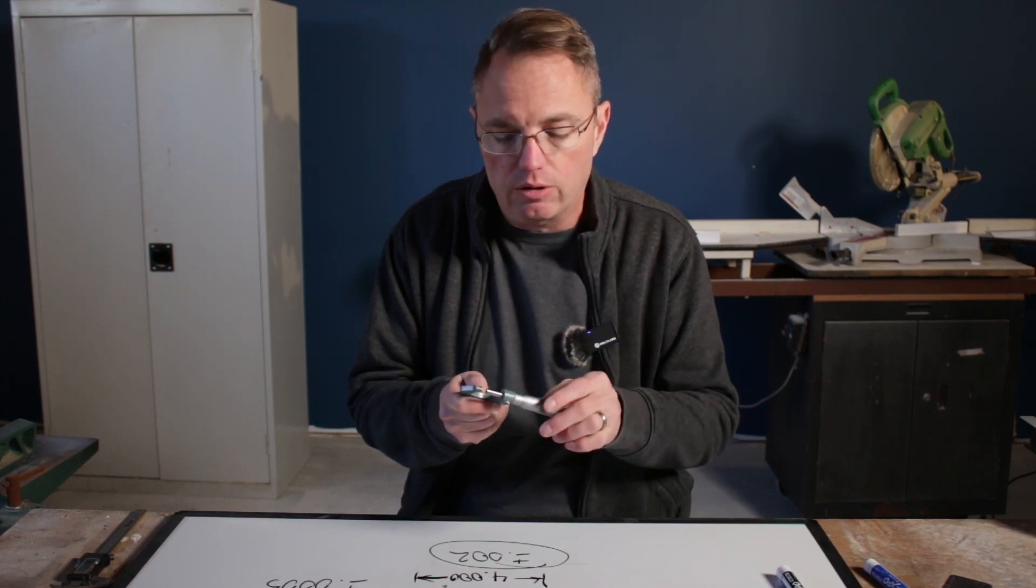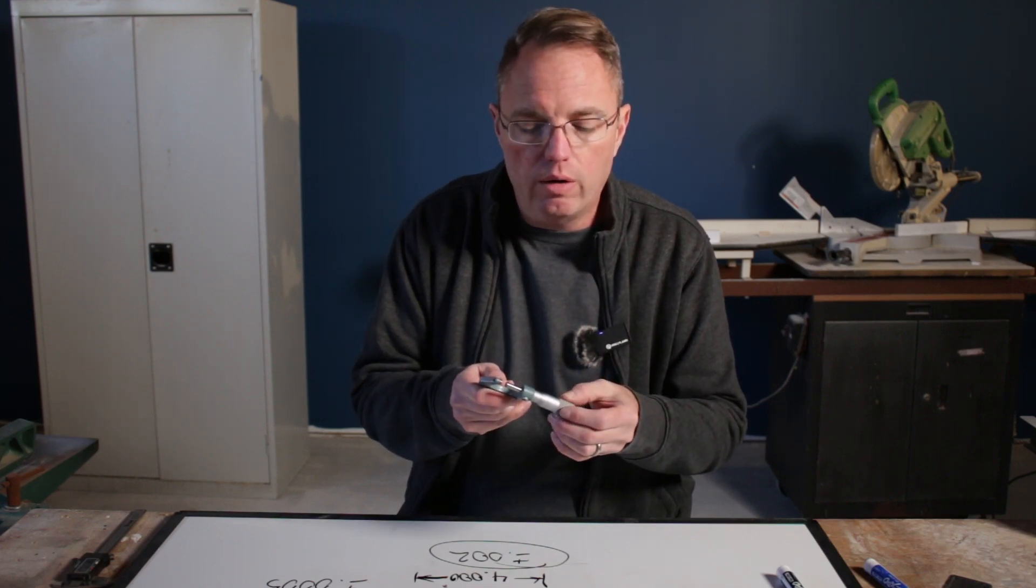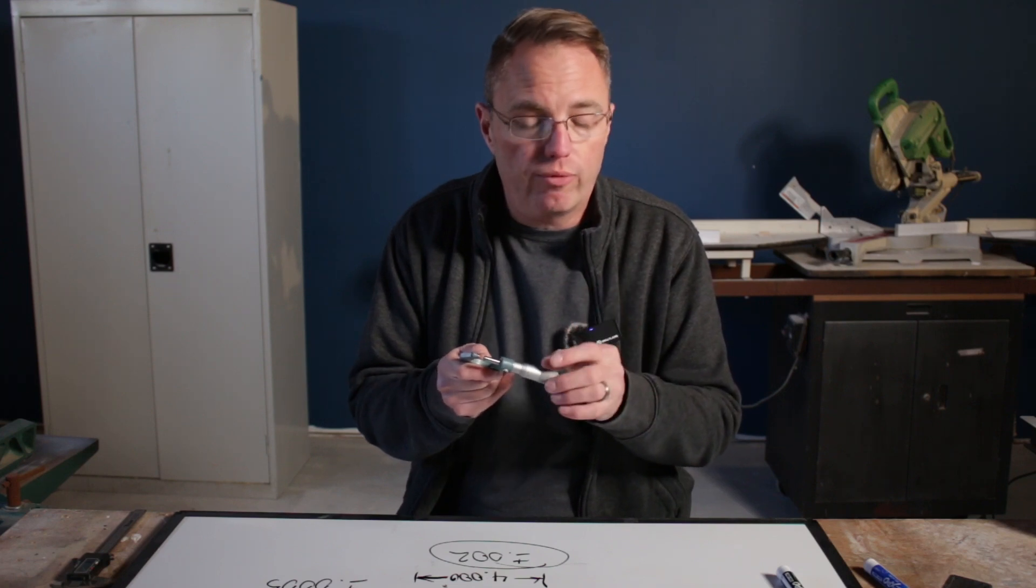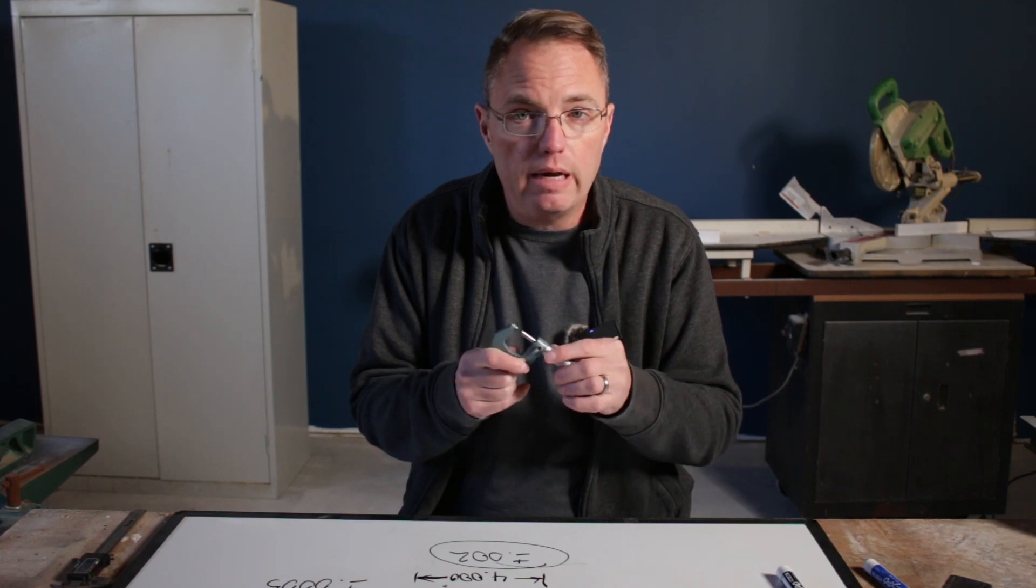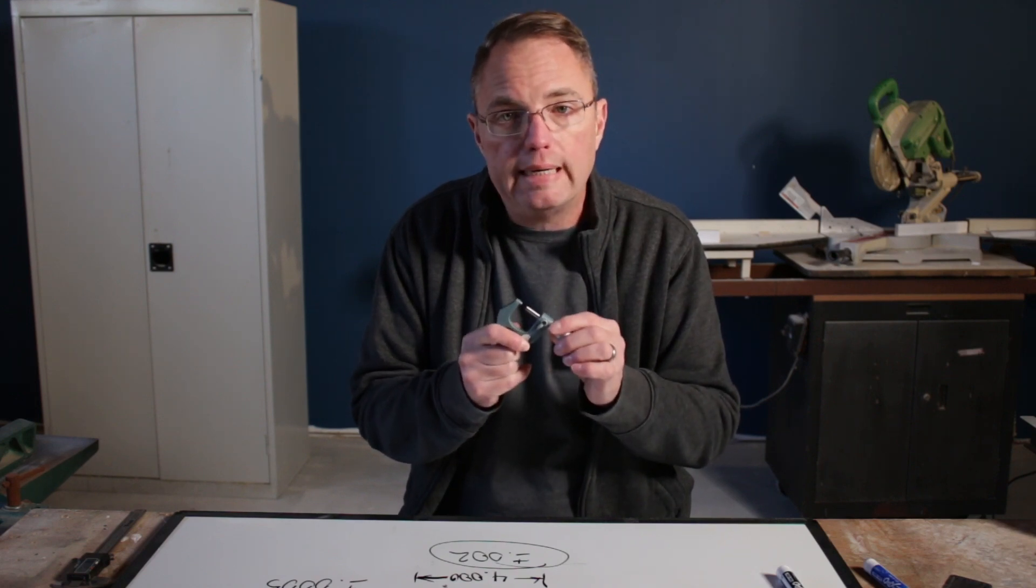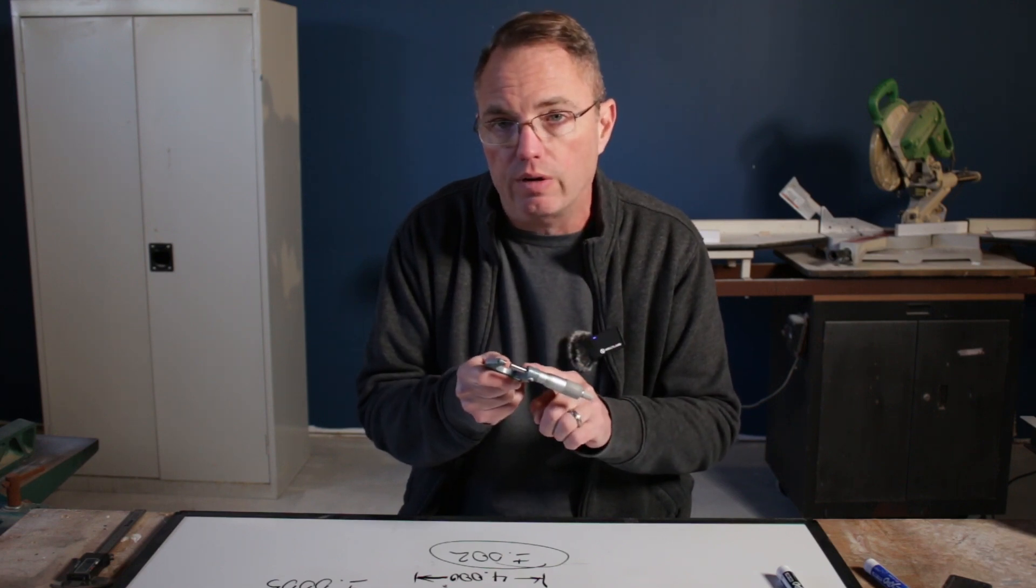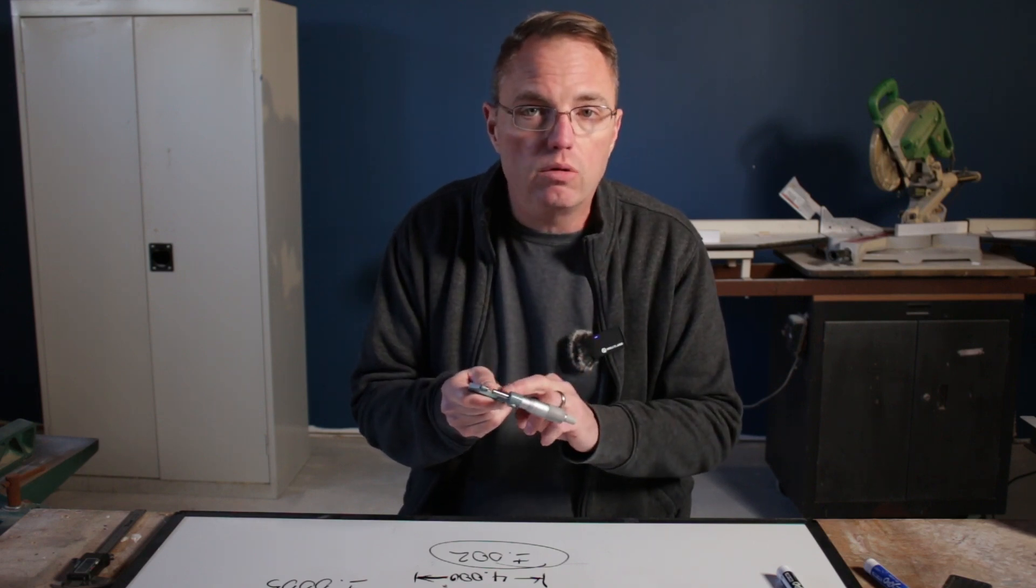Now, as a note on micrometers, often people will look for the minimum readout. In this case, this is a tenth micrometer, so it's got one ten-thousandths divisions on it, and they'll think that that's the accuracy of it. That is not always the case.